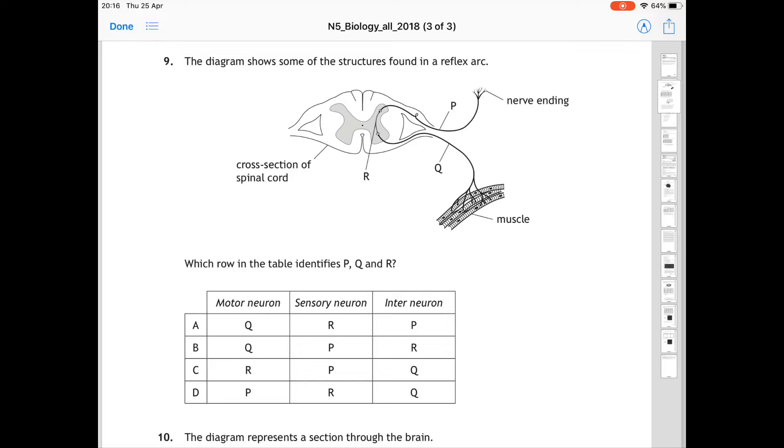For question 9, this is a question on the structure of the reflex arc, where we have the nerve ending and P, we have R in the cross-section of the spinal cord, and we have Q, which leads to the muscles. It asks you which row in the table identifies P, Q, and R. The correct answer for this is B, and the reason why some people get this wrong is because you're used to answering the reflex arc in the order of sensory, inter, motor, whereas if you read the question or read the answers available, it's asking them for you in the order of motor, sensory, and inter. So the motor neuron is Q because it's connected to the muscle, the sensory neuron is P because it's connected to the nerve ending, and the interneuron is R because it's in the spinal cord. So the correct answer is B.